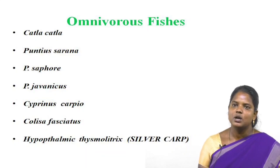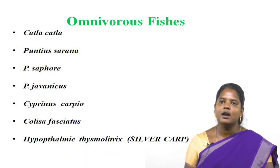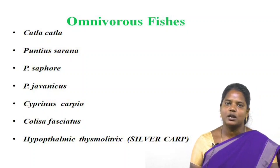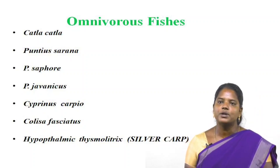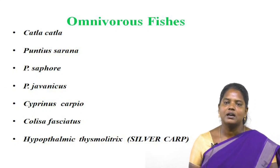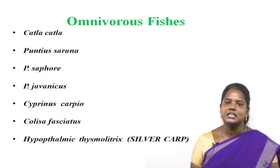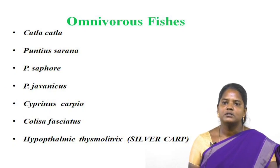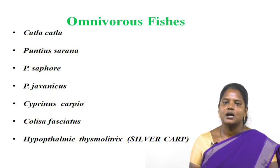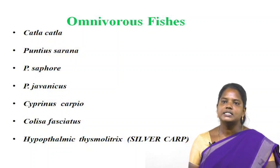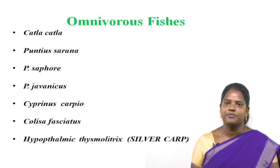What is meant by omnivorous fishes? The fishes feed on both plants and animals. Examples of omnivorous fishes include: Catla catla, Puntius sarana, Puntius sophore, Puntius gavanicus, Cyprinus carpio, Colisa fasciatus, Thymallus thymallus, and silver carp — these are all examples of omnivorous feeding habit of fishes.